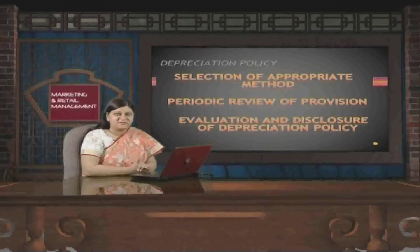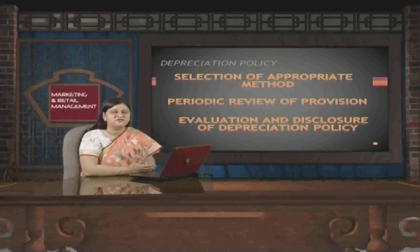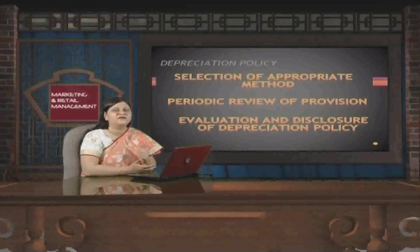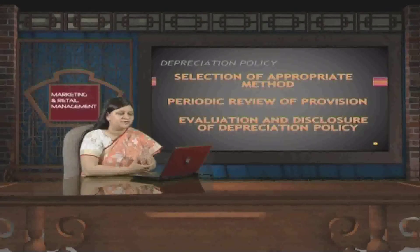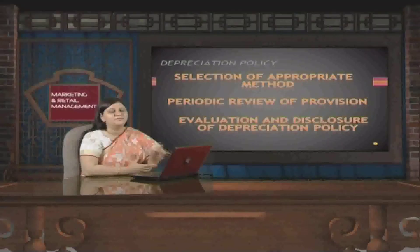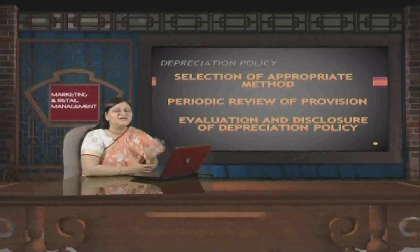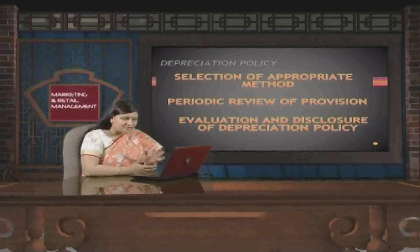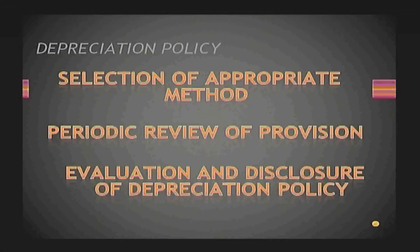The second aspect of depreciation policy is periodic review of provision. Once the method is selected and disclosed, it need not be changed year after year. However, management must ensure that the provisions reflected in the books of accounts are reviewed. Any change in the economic scenario, legal position, or accounting standards requiring a change in the method of accounting must be done, and for that purpose, periodic review of provision is necessary.